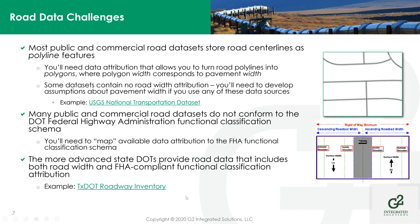Some datasets have that width information in great detail — for example, the Texas Department of Transportation Roadway Inventory dataset includes surface width, shoulder width, and median width. But many State DOT datasets don't conform to the FHA functional classification requirements. The USGS National Transportation dataset — the grandchild of the old Tiger Line files — contains no roadway width information at all. You may find yourself developing logic to define road width based on whatever road classification information you have. Very few state DOT datasets actually conform to the FHA functional classification, meaning you'll need to map whatever road type attribution you have to approximate the FHA classification. All of this will need to be documented as part of your processes going forward.